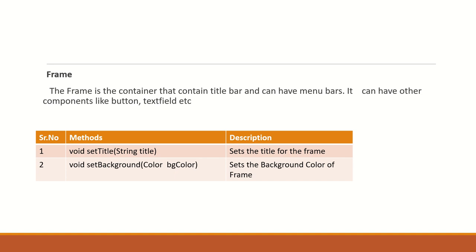Frame is a container that contains a title bar, can have menu bars, and can hold other components like buttons, text fields, and labels. The methods of the Frame class include: setTitle() to set the window title, passing a String; and setBackground() to set the background color of the frame, passing a Color class object. A frame provides the main window for a GUI application with a title bar, menu bar, and display area. It is the AWT class that creates a top-level window with a title and border.